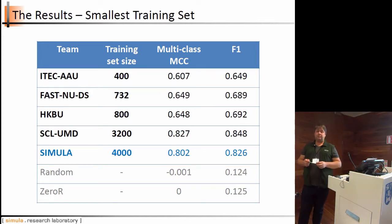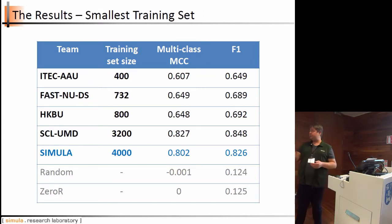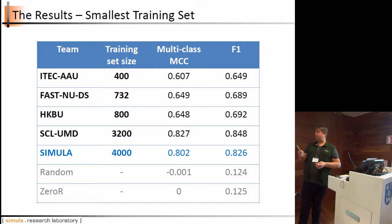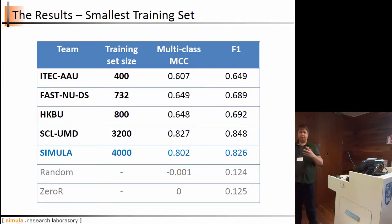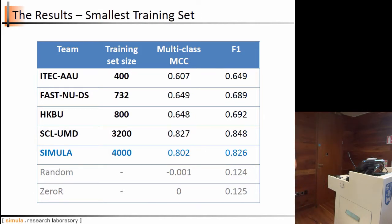For the second goal of the detection subtask, we asked participants to use as little training data as possible. Surprisingly, participants achieved very good results with very small training datasets. Using only one tenth of the full training data, the system performance was very high compared to random baseline.